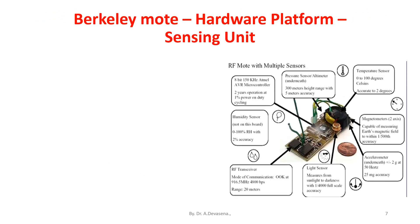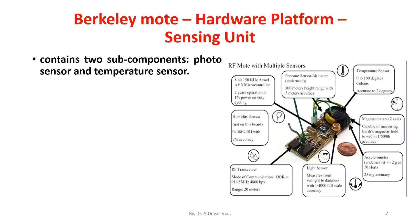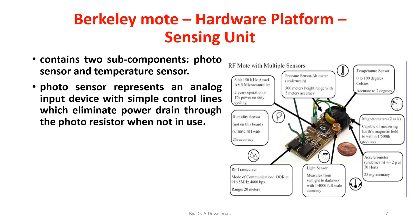The sensing unit of the Berkeley Mote contains two sub-components: a photosensor and a temperature sensor. The photosensor represents an analog input device with simple control lines, which eliminate power drain through the phototransistor when not in use. The temperature sensor, analog device AD7418, represents a large class of digital sensors which have internal AD converters and interface over a standard chip-to-chip protocol.